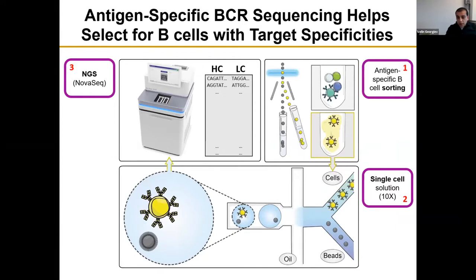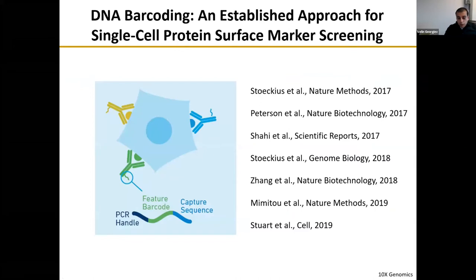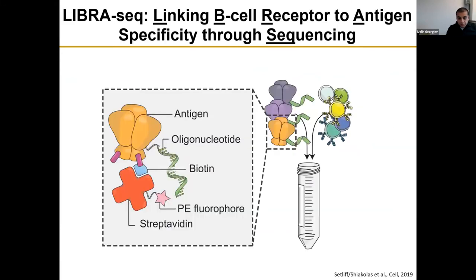The basic process of antigen-specific BCR sequencing involves starting with antigen-specific B cell sorting. We have an antigen of interest, sort for B cells reactive against it, then use a single-cell solution — in our case, 10X, though other platforms can be interchanged. From there we go to next-generation sequencing to obtain BCR information at the single-cell level. On the DNA barcoding side, this has typically been done with labeling antibodies against cell surface markers. We decided to combine these two technologies into something we call LibraSeq.